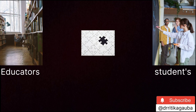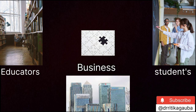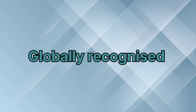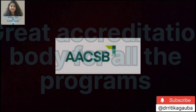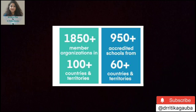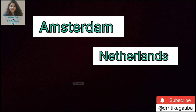This association connects students, educators — that is universities and institutions — as well as the business world. What makes AACSB so special is that it has global recognition as a great accreditation body for all management, business, and accounting programs. Currently, AACSB has more than 1,850 members spread across 100-plus countries and has given accreditation to 950 schools and institutions across 60 countries. Besides the USA, this body also has offices in Amsterdam, Netherlands and Singapore.